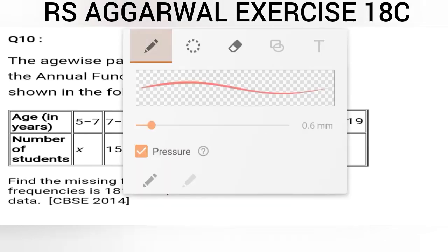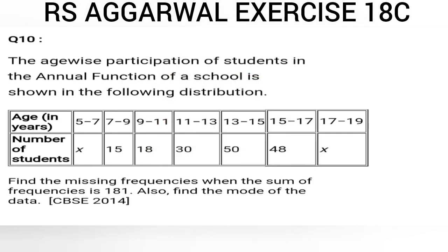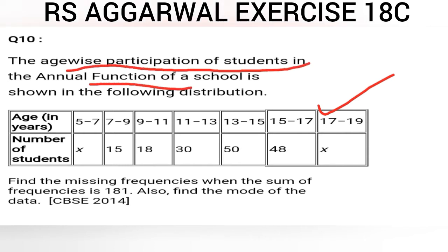As you can see here, students, we are given a distribution table showing age groups of students who participated in the annual function of their school. The age-wise participation of the students in the annual function of a school is as shown in the given table. We are given the frequencies — the age group 5 to 7, the number of students is x.